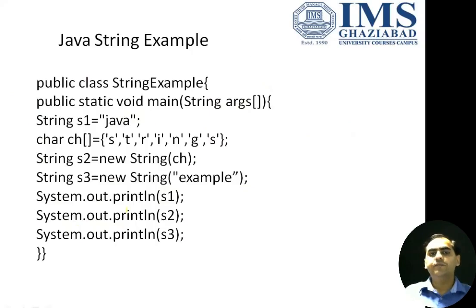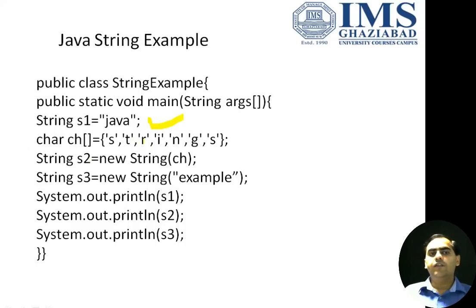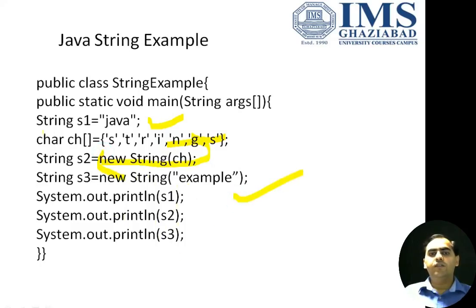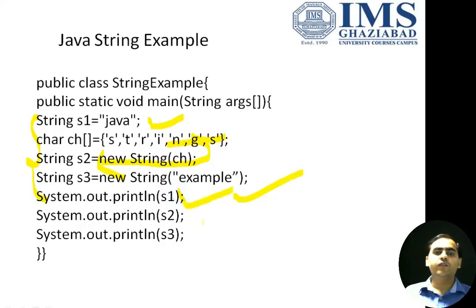In the example, we first take a String object s1 and store 'Java'. Second, we use a character array and store its characters directly into a string using new String(ch). Third, we store a string using the new operator. We can print the values of s1, s2, and s3. These three methods can be used for declaration of a string in Java.